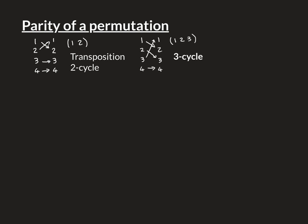Another example: here we have a slightly more complicated cycle where 1 goes to 2, 2 goes to 3, and 3 goes to 1. This is a cycle of three elements — what we call a three-cycle. The notation for this is (1 2 3), showing that 1 is mapped to 2, 2 is mapped to 3, and 3 is mapped to 1. It's a nice rotation of three elements, and this is where the cycle concept comes from.